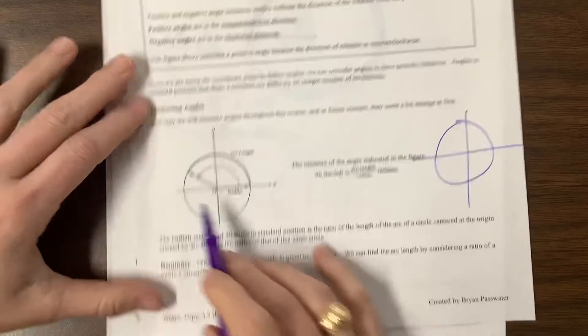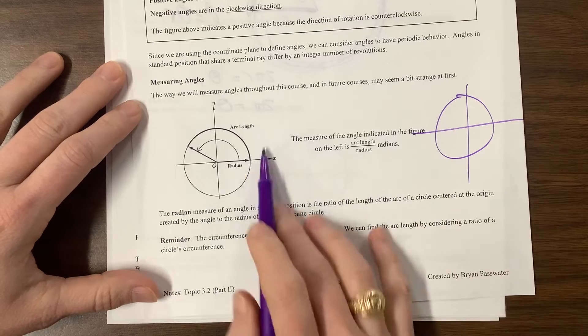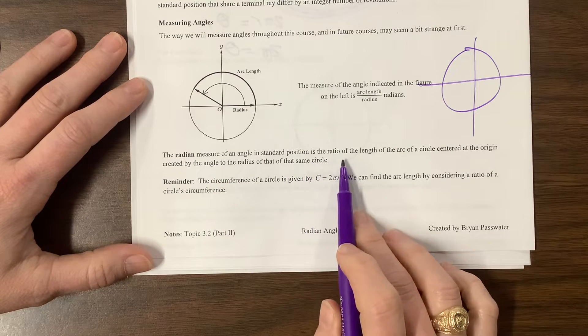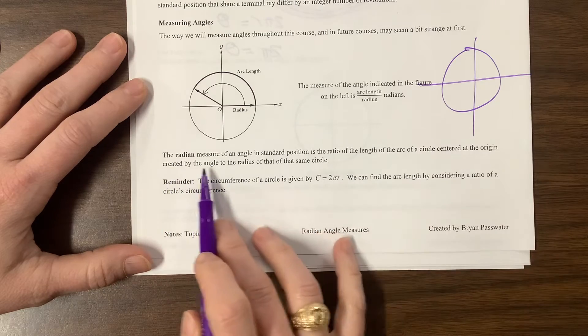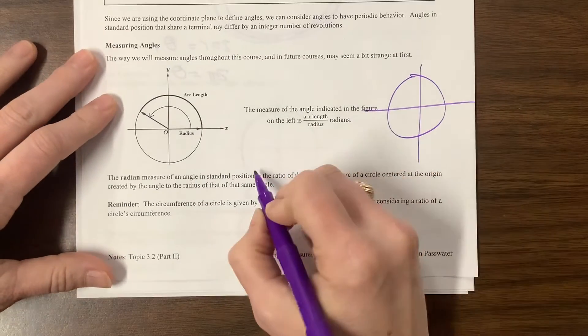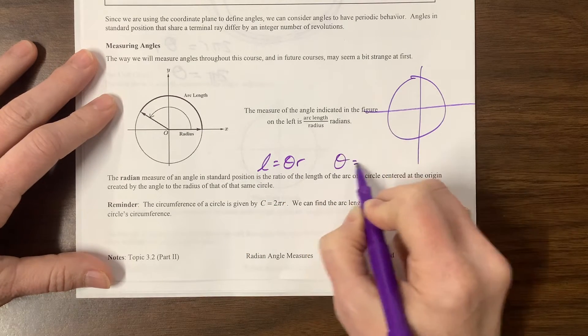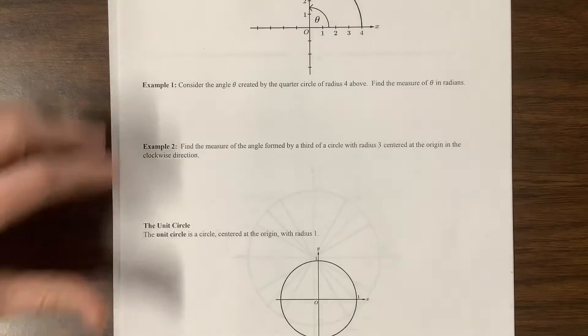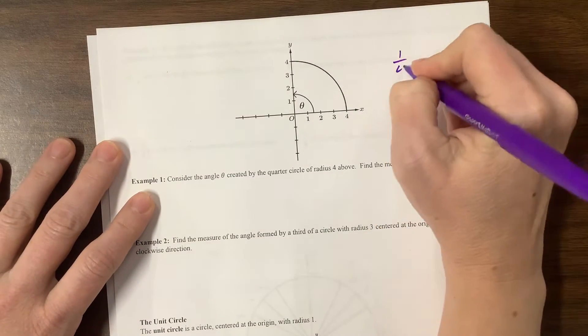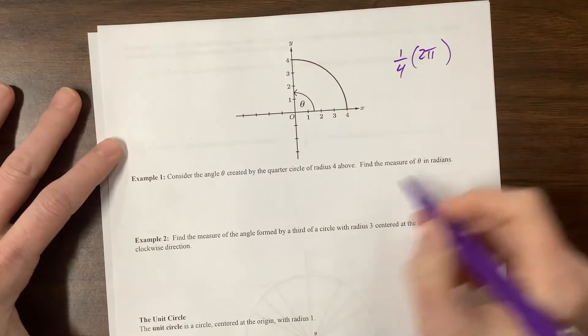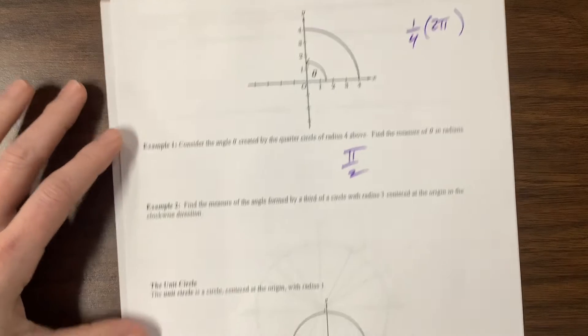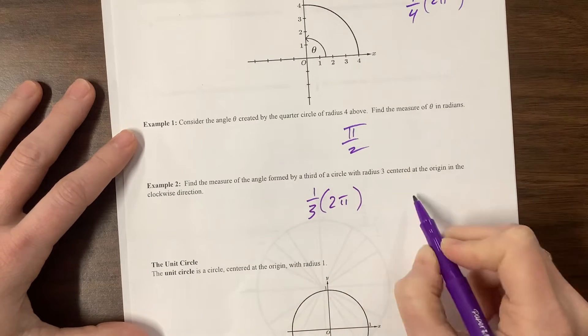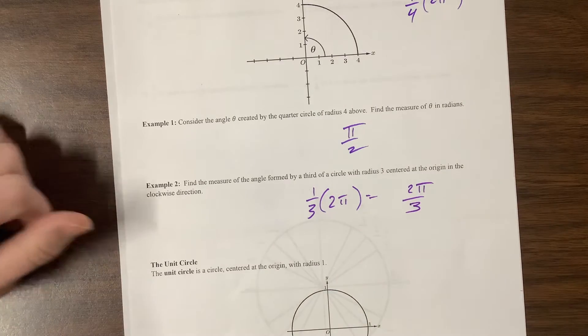So we have, what they're saying here, the measure of the angle indicated on the left is arc length divided by radius, radians. So the radian measure of an angle in standard position is the ratio of the length of the arc centered at the origin created by the angle to the radius of that same arc. What I have taught is that arc length equals theta r, so they're saying theta is equal to the arc length divided by r. So now, this is a quarter of the circle, so this is a quarter of 2π, which means that this angle here is π over 2 radians. Find the measure of the angle formed by a third of the circle. A third of 2π is equal to 2π over 3. That's what we would say.